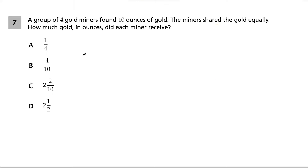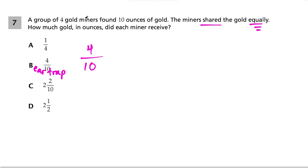Question 7. A group of four gold miners found 10 ounces of gold and share it equally. How much gold does each miner receive? Be careful — it's tempting to say 4 over 10 and pick choice B, but that's a bear trap. Think carefully: the 10 ounces of gold is what's being divided among the 4 miners, so we do 10 divided by 4.